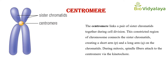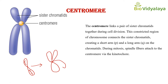First we can discuss about centromere. The centromere is the region of a replicated chromosome that holds two sister chromatids together. During S phase — the synthesis phase of the cell cycle — DNA replication occurs, resulting in the formation of two identical copies of each chromosome, and these are called sister chromatids.